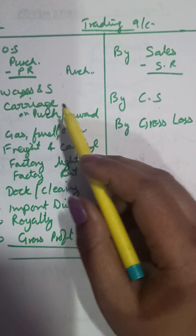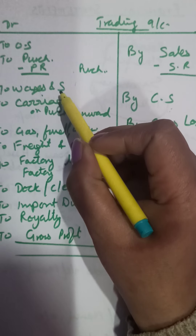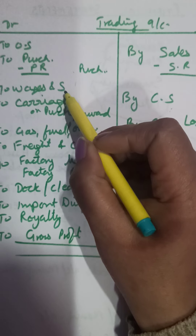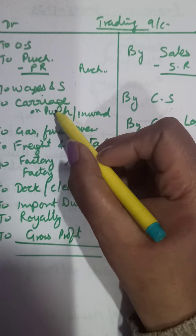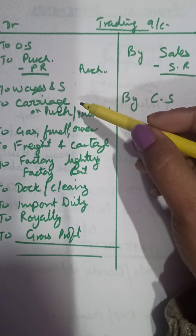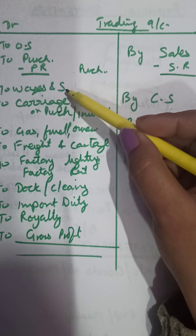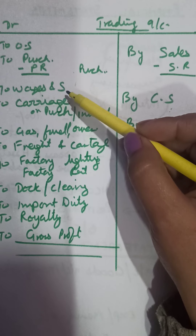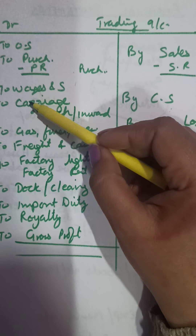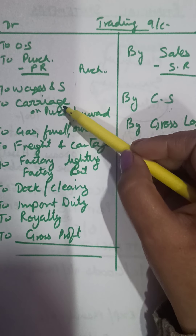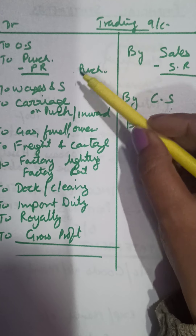Wages — remember, if the word 'wages' is given we take it in the trading account. Salaries are given to the office staff, whereas wages are given to the manufacturing or factory staff. So all manufacturing and factory expenses go here. If a combined term like 'wages and salaries' is given, you go with the first word — wages — so it goes in the trading account. Carriage, if only the word 'carriage' is given, it is assumed to be in the trading account.